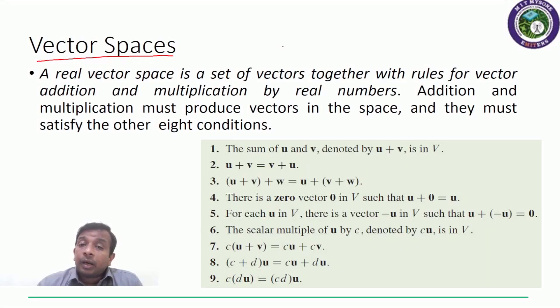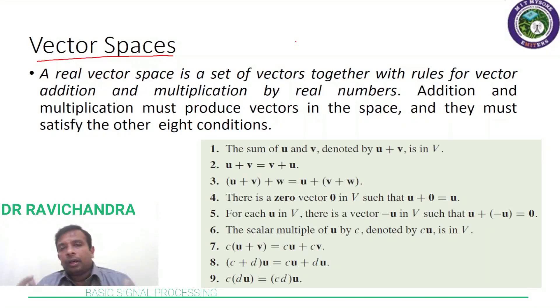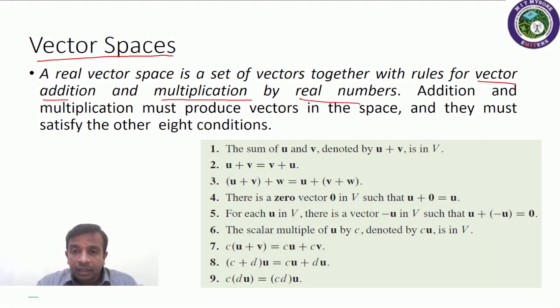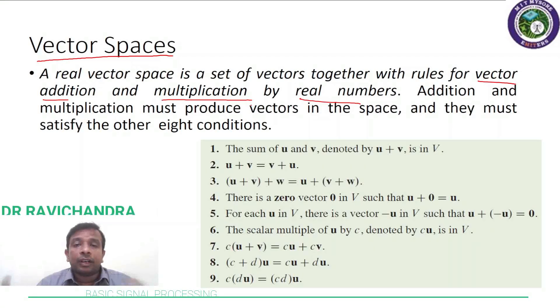As the name suggests, vector spaces have something to do with vectors. If we consider column vectors and row vectors, matrices are nothing but a set of vectors—rows and columns together. If they contain real numbers, they become real vectors. A real vector space is a set of vectors together with rules for vector addition and multiplication by real numbers, that is, scalar multiplication. They adhere to this rule, and that particular set or space we call a real vector space.